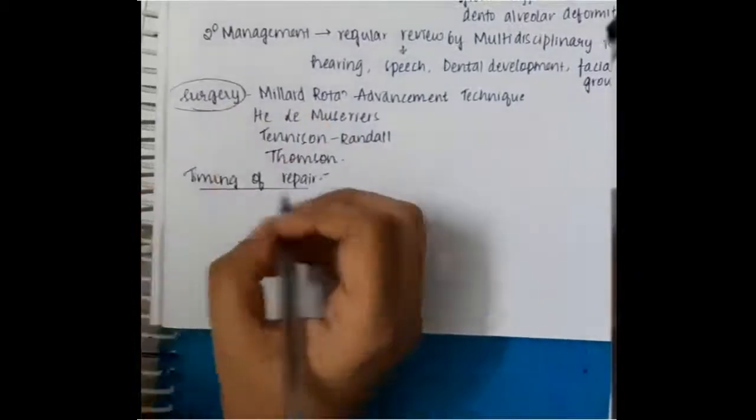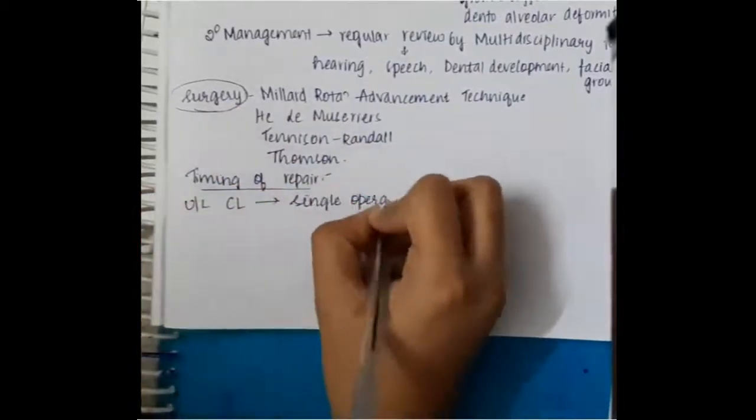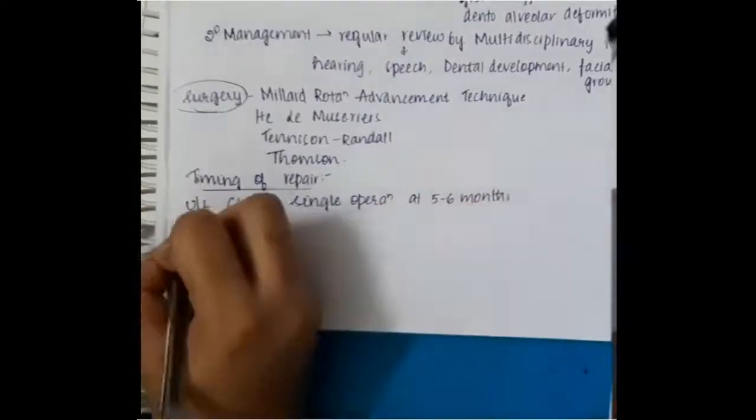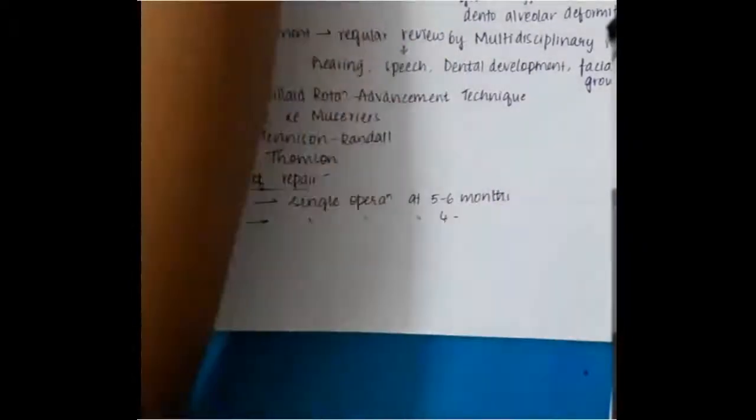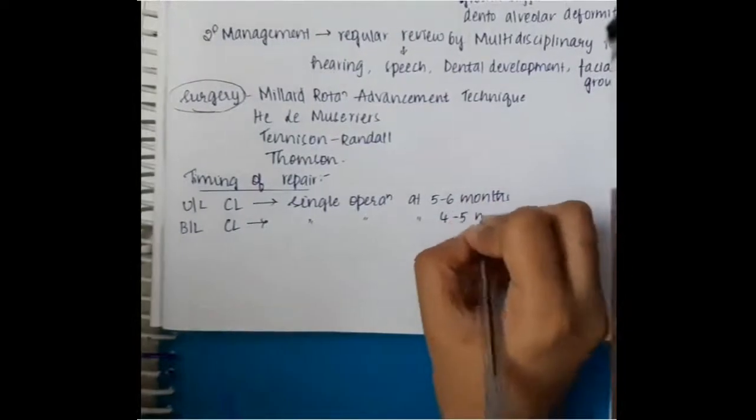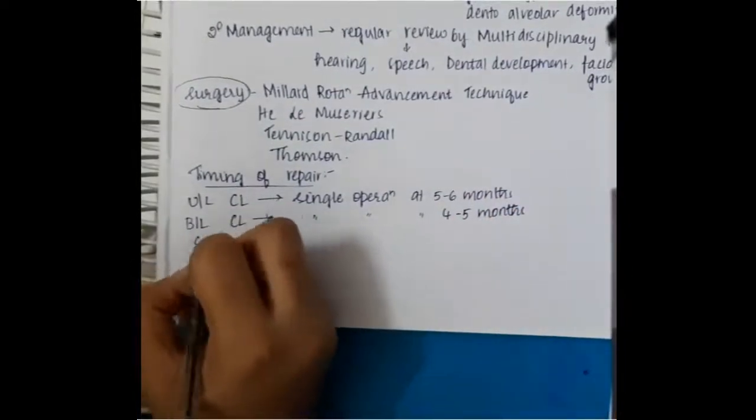If there is unilateral cleft lip, then you should do single operation at 5 to 6 months. If it is bilateral cleft lip, single operation is done at 4 to 5 months.